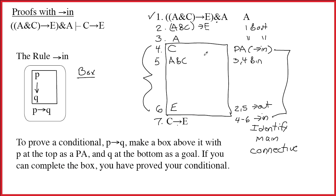Alright, we have finished the proof. We can go back here one more time and talk about the rule. And notice, of course, I have it written down here what the rule means. To prove a conditional, P arrow Q, to prove something like C arrow E, make a box above it with P at the top as a PA and Q at the bottom as a goal. If you can complete the box, you have proved your conditional.